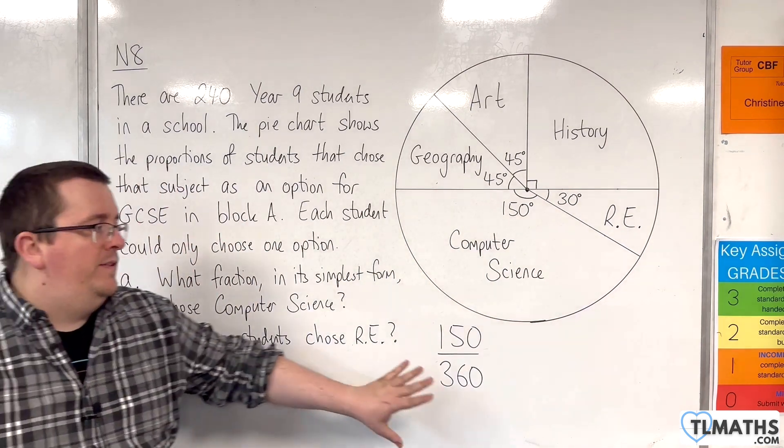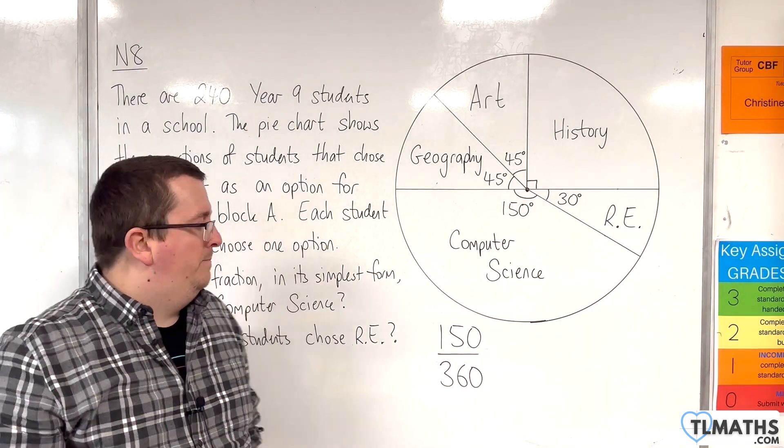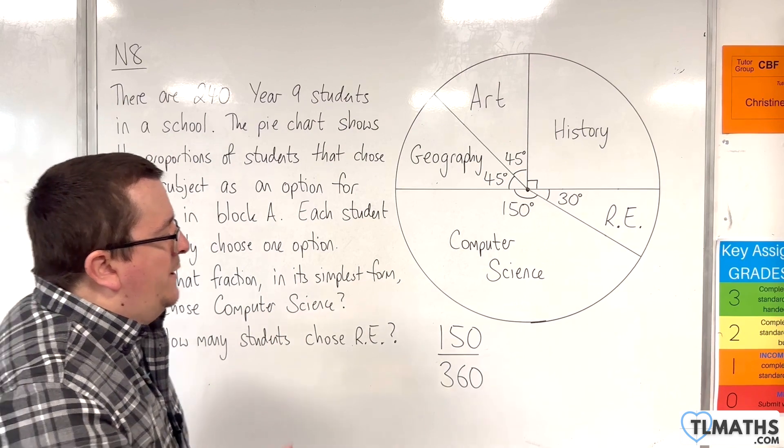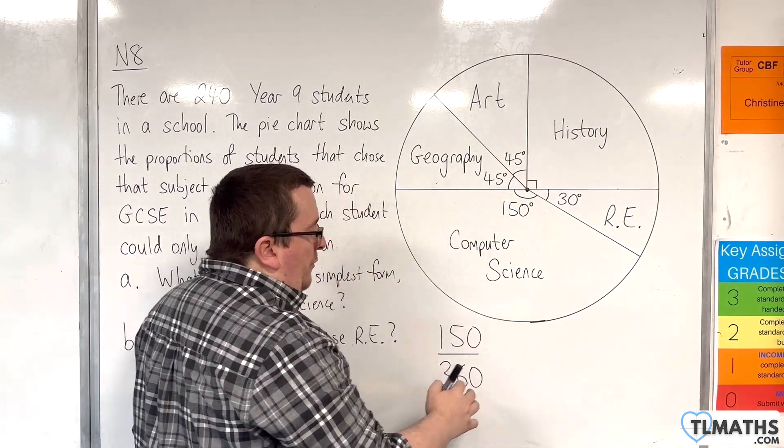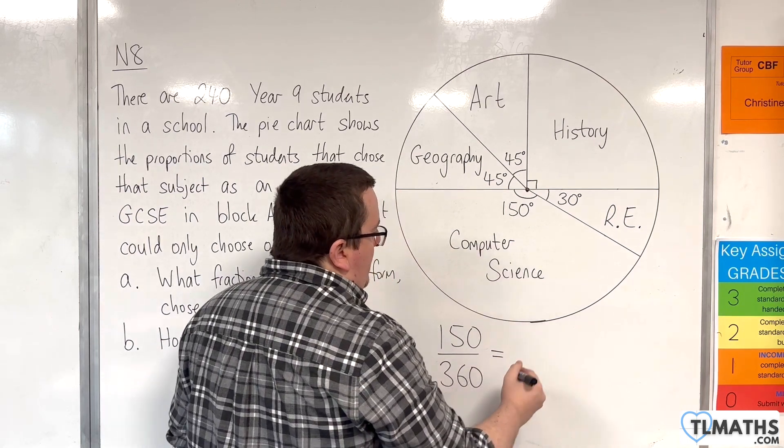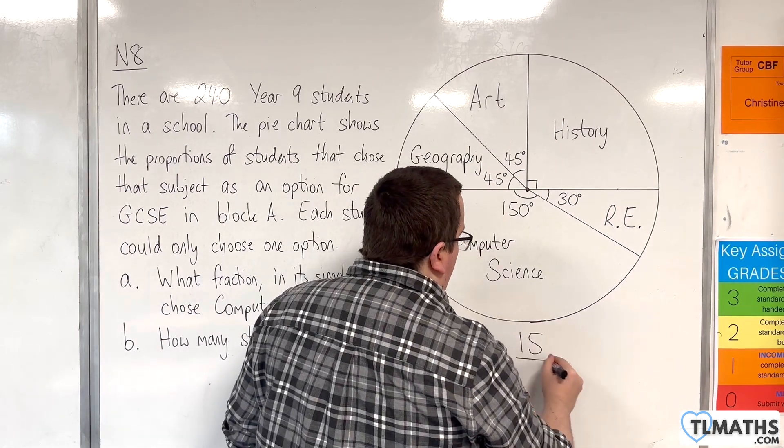We need to simplify this fraction as far as we can. The first thing to note is that both the numerator and denominator end in a zero, so we can divide top and bottom by 10 to get 15 over 36.